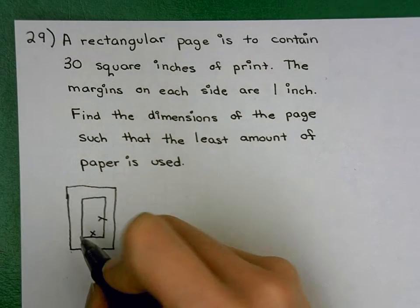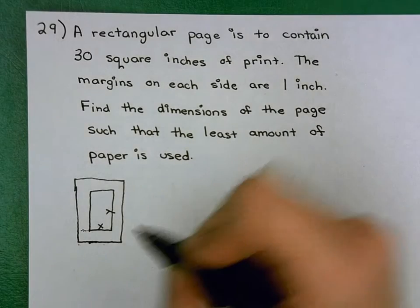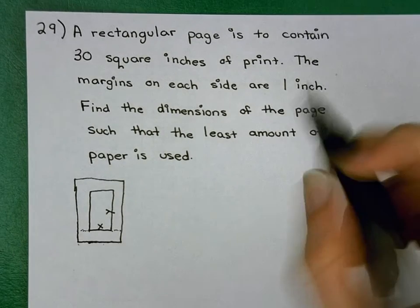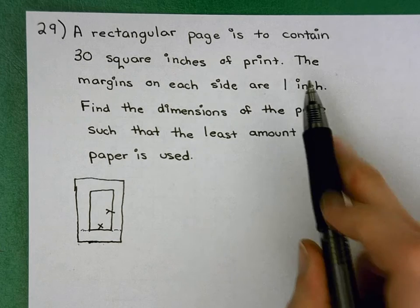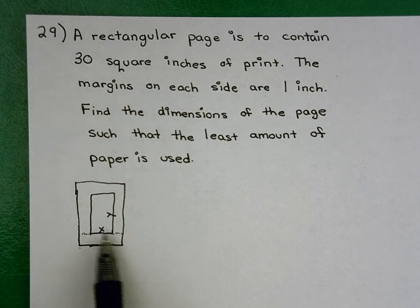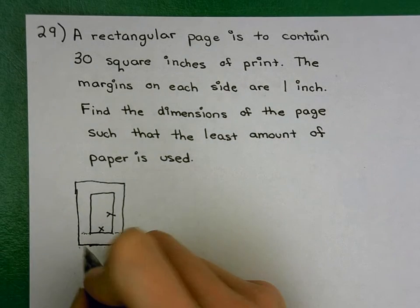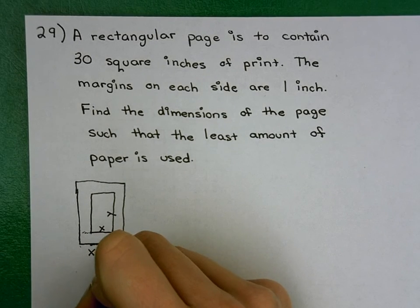Well, that's where my margins come in, because this margin here is 1 inch, and this margin over here is 1 inch. Every margin was 1 inch long. And so, if this piece is X, then the whole thing would be X and 1 and another 1. So this whole thing is X plus 2.